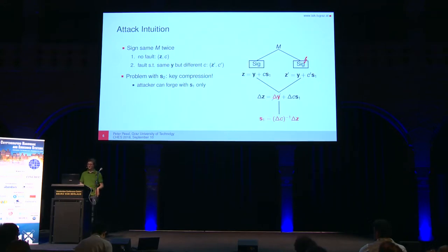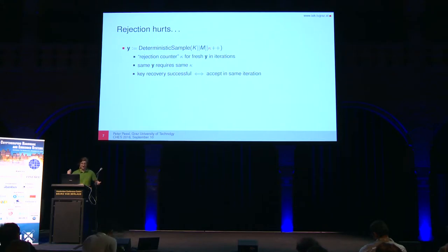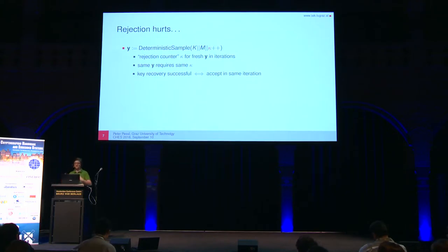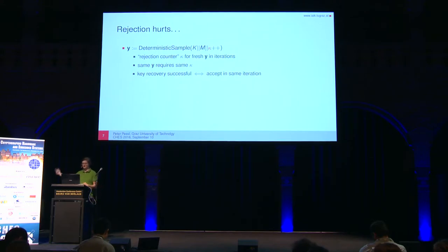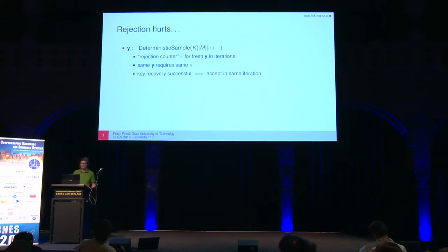There's one thing we skipped over: rejection sampling also hurts our attack. The nonce Y is sampled using a hash of K, M, and a rejection counter kappa, which increments each time a signature gets rejected, giving a fresh Y each iteration. To have a nonce reuse, you need to use the same kappa, meaning key recovery is only successful if both the non-faulted and faulted executions accept the signature in the same iteration. Injecting a fault may cause the faulted signature to be rejected, so the fault position determines the success probability.